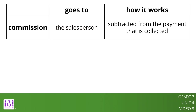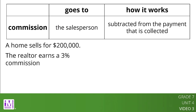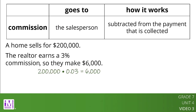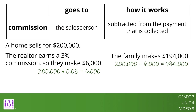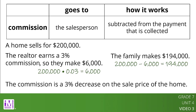For example, a Realtor helps a family sell their home for $200,000. If the Realtor earns a 3% commission, then the Realtor makes $6,000, because 200,000 multiplied by 0.03 equals 6,000. This means that the family makes $194,000, because 200,000 minus 6,000 equals 194,000. From the family's perspective, we can think of this as a 3% decrease on the sale price of the home.